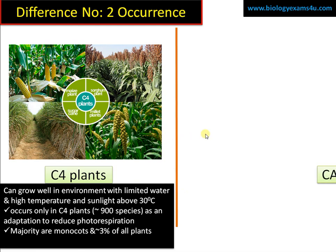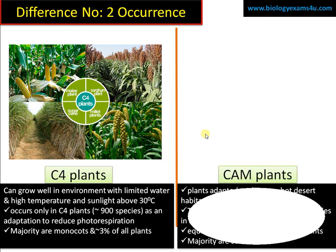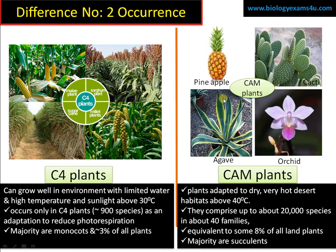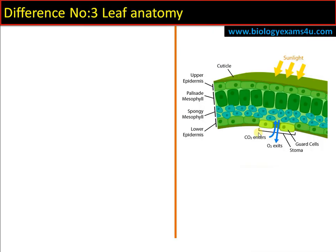CAM pathway is shown by plants living in desert conditions — very hot, above 40 degrees Celsius — where water is very deficient or scarce. Examples include pineapple, cacti, agave, orchid, etc. Approximately 20,000 species in about 40 families follow this pathway, accounting for nearly 8% of all land plants. The majority are succulents, as water conservation is very important.